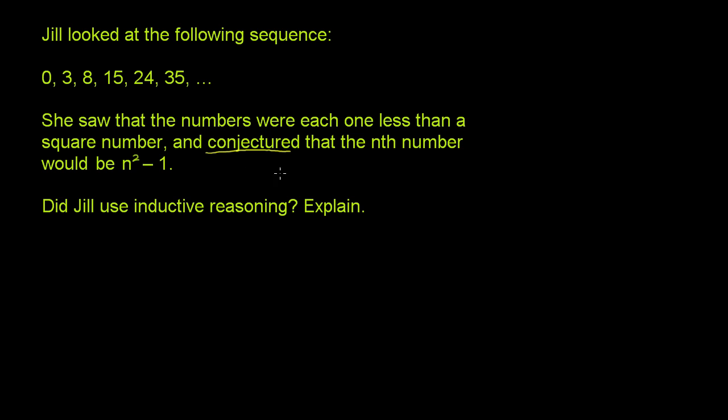So she conjectured that the nth number would be n² minus 1. The reason why this is a conjecture, as opposed to a 100% definitely true statement, is we don't know whether this pattern continues. She's just going off of the pattern that she saw so far, and she just generalized it.